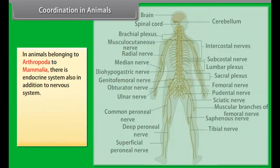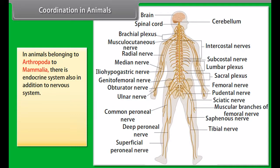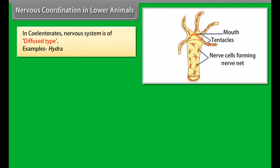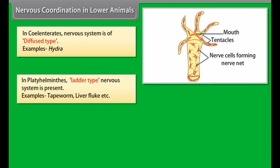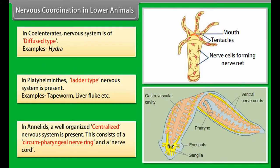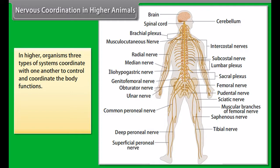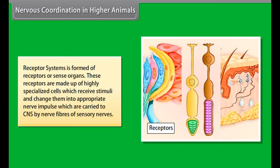In all animals belonging to coelentrates to mammalia, multicellular control and coordination of body functions is enabled by specialised cells called neurons. In higher metazoans, these neurons are organised to form a nervous system. In coelenterates, the nervous system is of diffused type (e.g., Hydra). In platyhelminthes, a ladder-type nervous system is present (e.g., tapeworm, liver fluke). In annelids, a well-organised centralised nervous system is present, consisting of a circumpharyngeal nerve ring and a nerve cord.